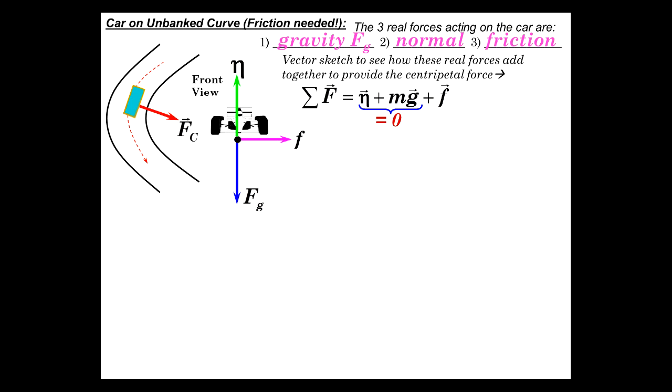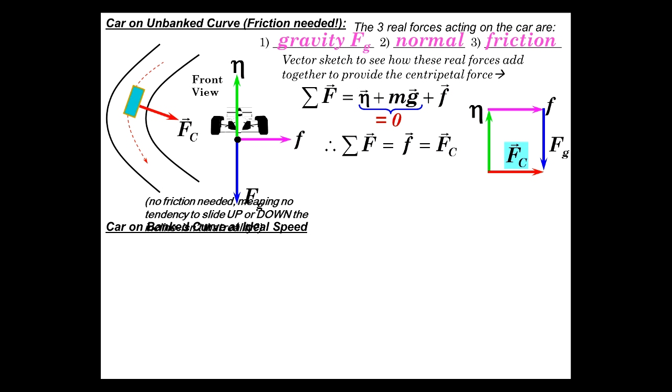So sum of the forces as vectors. Normal plus mg. And those two are zero. They just cancel. Plus friction. So sum of F is friction. And that's centripetal force. The real force providing the centripetal force is friction. Alright. We're going to add them together now. There's normal. Let's add friction onto that. Tail to tip. Tail to tip weight. And you see those three real forces add together to give us the centripetal force. Once again, it makes sense.